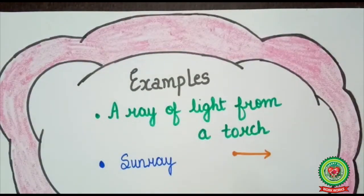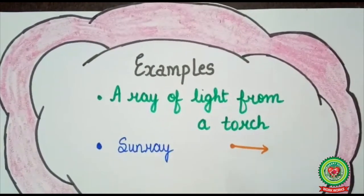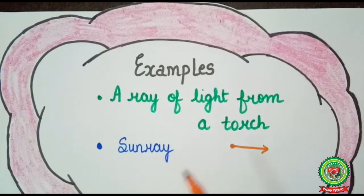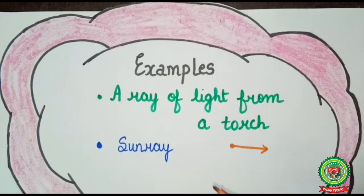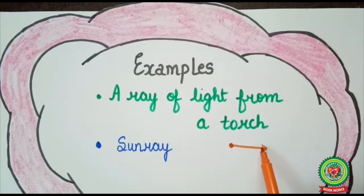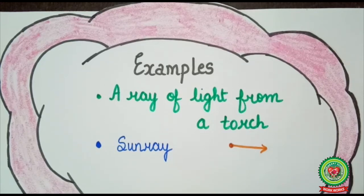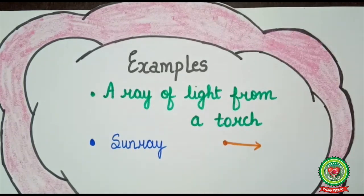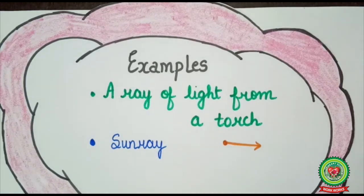Let's understand with examples. The ray of light from a torch — the torch is a fixed source of light, and when light comes out it covers a straight path, therefore it is an example of a ray. Similarly, a sun ray is also an example of a ray.